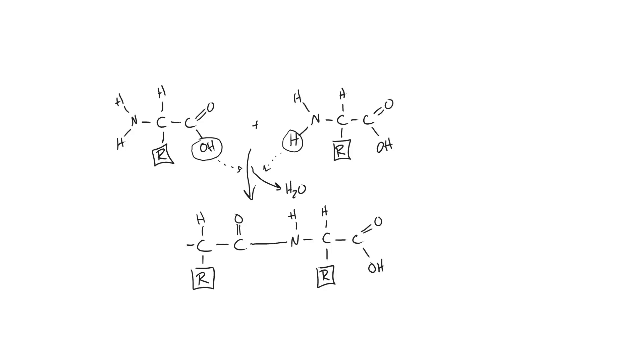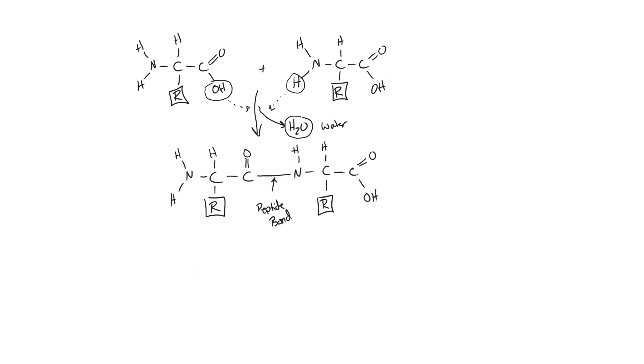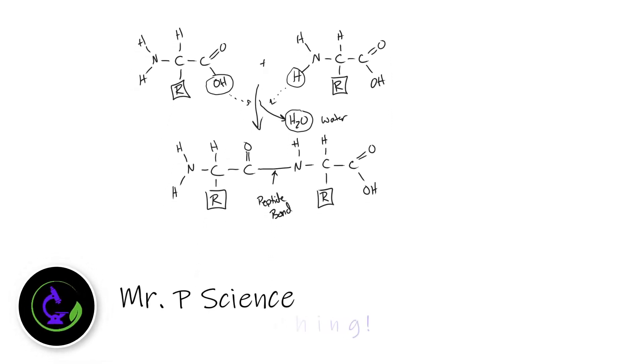Notice right here now we have this peptide bond, which we can go ahead and label, which forms as a result of this dehydration synthesis reaction from linking these two individual amino acids while also simultaneously producing water. We can go ahead and label that as well. This would be all of the necessary requirements for drawing the molecular diagrams of the formation of a peptide bond.